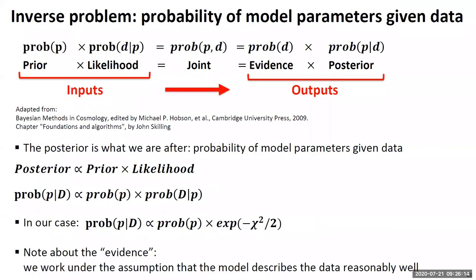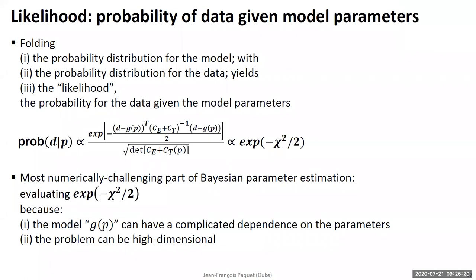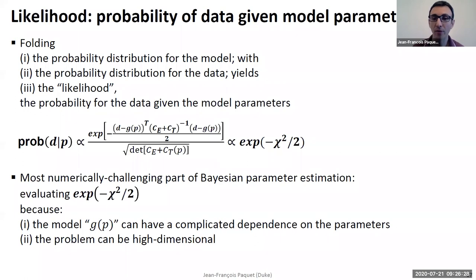Quick question: is the fact that the experimental and theoretical covariance matrices C_e and C_t add up an assumption or can it be demonstrated? It can be demonstrated — I'll send a reference that shows how to do this properly. It is exact.